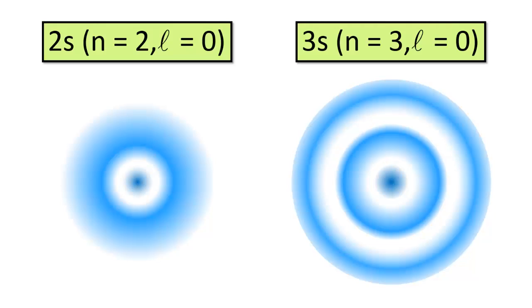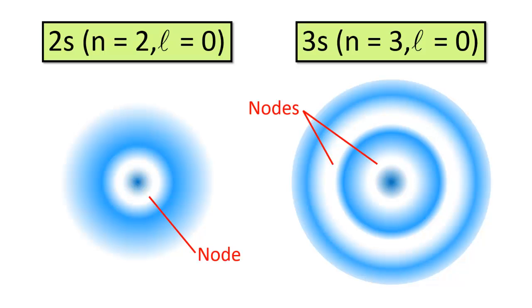Let's take a look at the s orbitals that are in the second and third principal energy levels, the 2s and 3s orbitals. Just like the 1s orbital, the 2s and 3s orbitals are spherical, but unlike the 1s orbital, these higher energy orbitals have gaps in them. These gaps are called nodes.